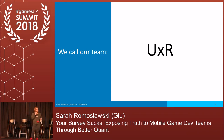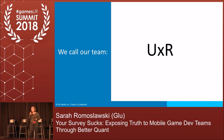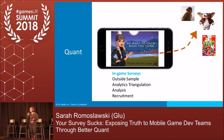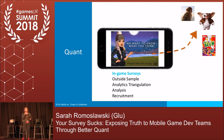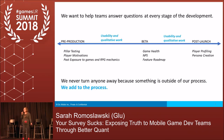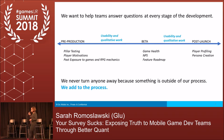The user experience research team at Glue is five of us now. I spoke in 2014, and back then I was essentially a team of one. We call ourselves UXR for short. When I talk about quant, I'm talking a lot about end-game surveys where you see a pop-up, the player clicks it, and goes to your survey tool — SurveyMonkey, Gizmo, or Qualtrics. Or collecting outside sample, learning about competitors, working with analysts to do really good triangulation. I'm also talking about the analysis and recruitment. We're a mixed-methods team.